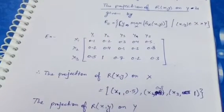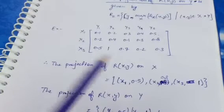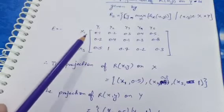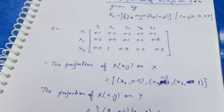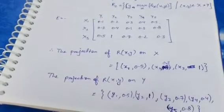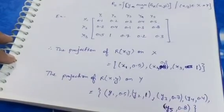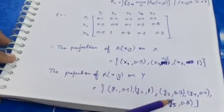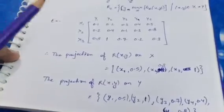Now for the projection of R(xy) on Y, for each Y variable we look at the maximum in that column. For y1 it is 0.5, y2 it is 1, y3 it is 0.7, y4 it is 0.4, and y5 it is 0.8. So this is the example of how to find the projection of a fuzzy relation.